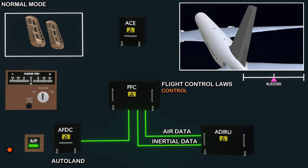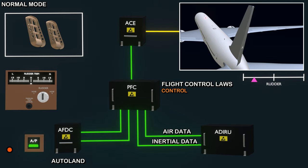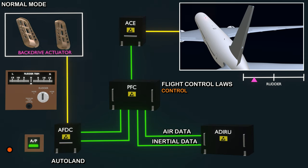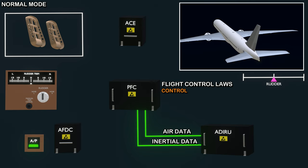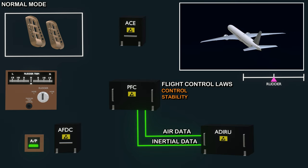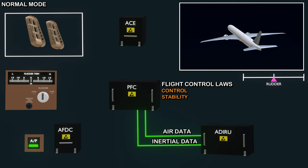When it requests a rudder deflection, the flight computer operates the control surface. At the same time, the flight computer informs the autopilot to back drive the rudder pedal and match the rudder deflection. Once the autopilot request is complete, the rudder is returned to the neutral position. The second category of software function is stability augmentation. The aircraft is designed to be naturally stable in all three axes of flight, but strong wind disturbances can lead to an uncomfortable flight experience. The flight computer uses the control surfaces to reduce the gust effects and improve stability.